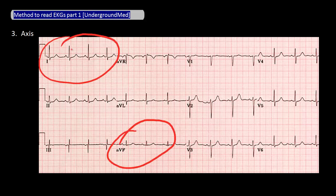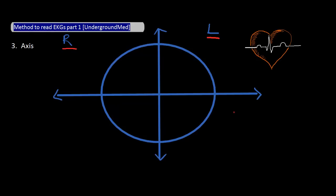Let's look at lead 1 first. Here you can see that the QRS complex is mainly positive. Now let's look at AVF — again we see the QRS is mainly positive. When lead 1 and AVF are both positive, it is considered a normal axis. We'll use a circle to represent a simplified version of a heart divided into four quadrants. Lead 1 measures electrical depolarization in one direction and AVF in another. If both are positive, the net depolarization moves somewhere in between, and this quadrant corresponds to what we consider a normal axis.